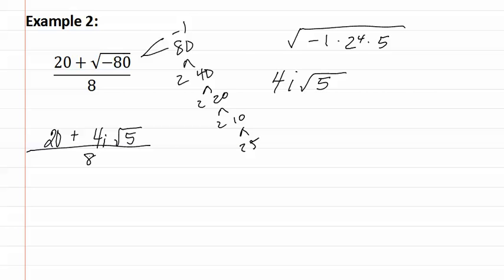Now we need to reduce, so we factor out whatever we can in the numerator. In this case, that's a four. Which leaves us with five plus i root five, because once again we don't need a one in front, just like we don't need a one in front of an x, over eight.